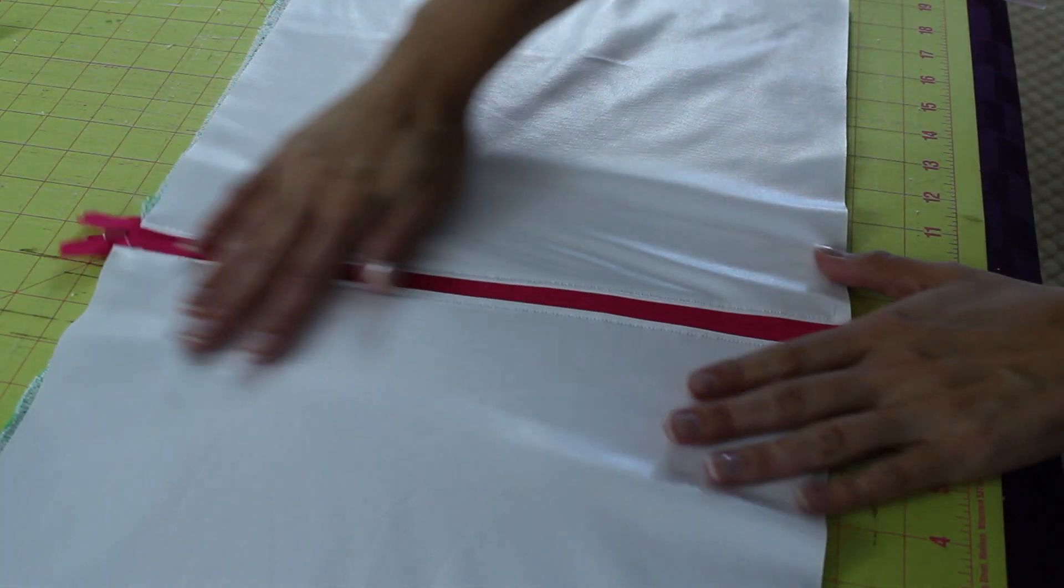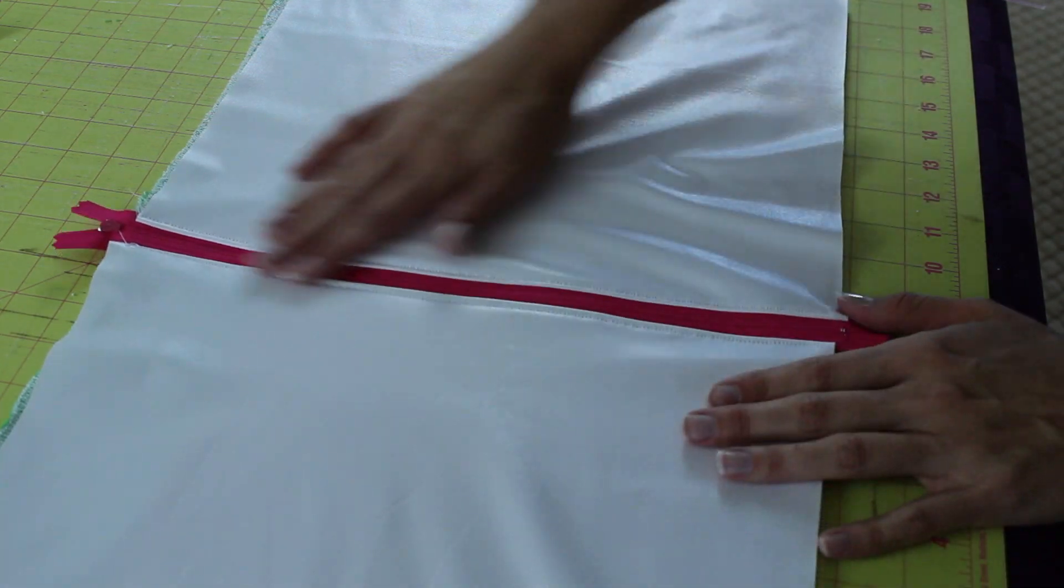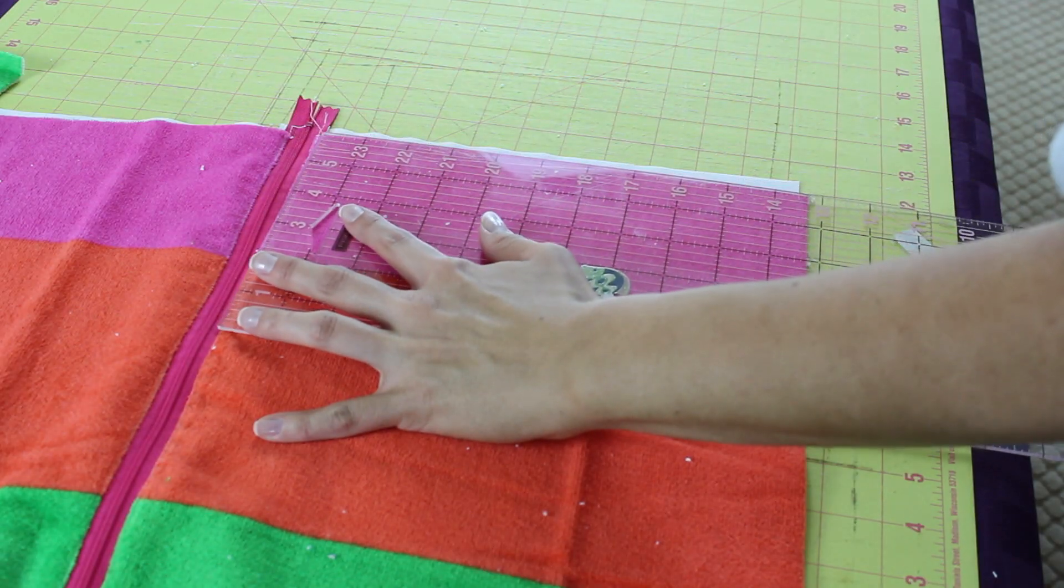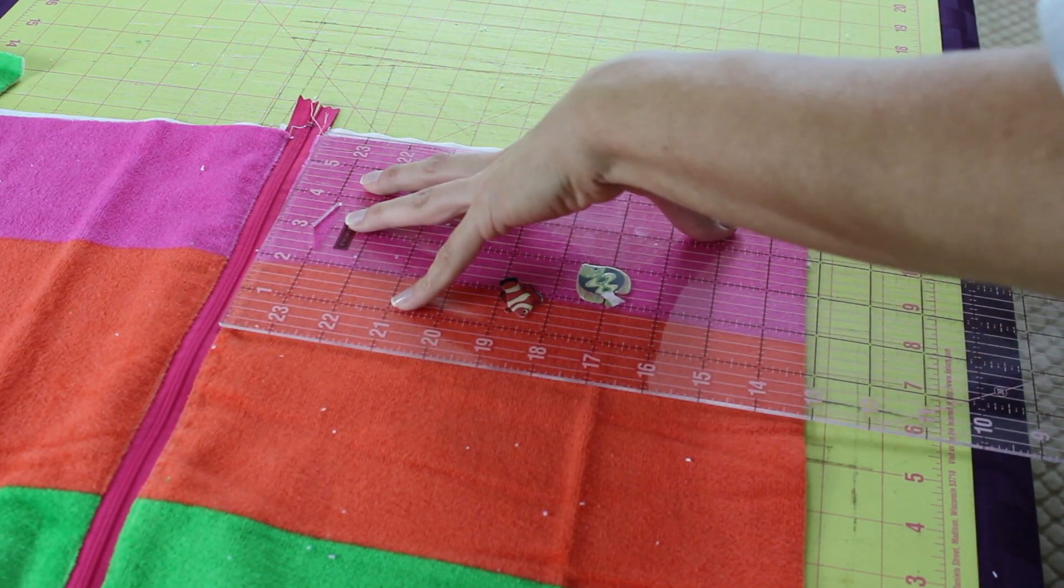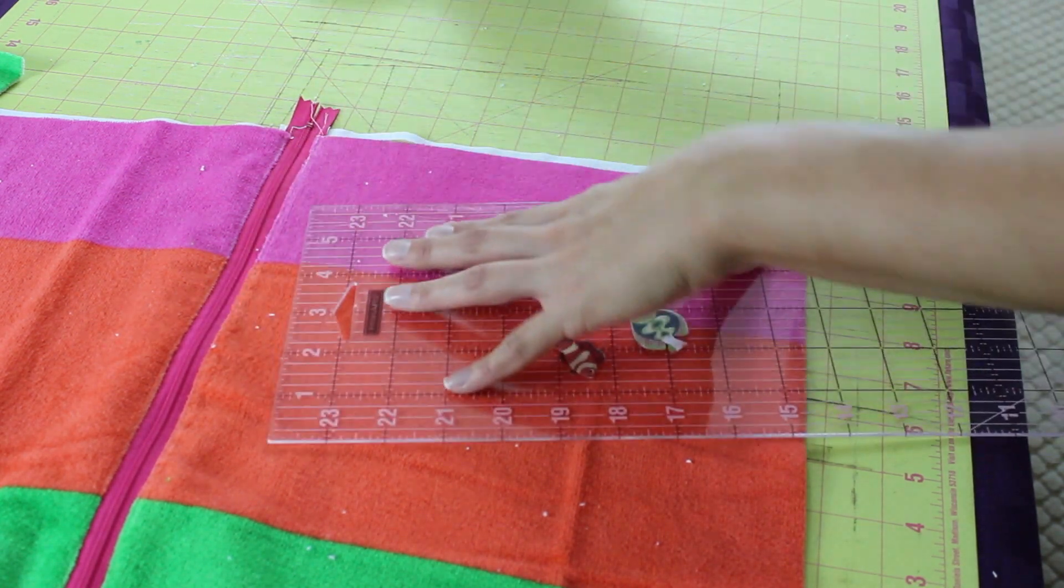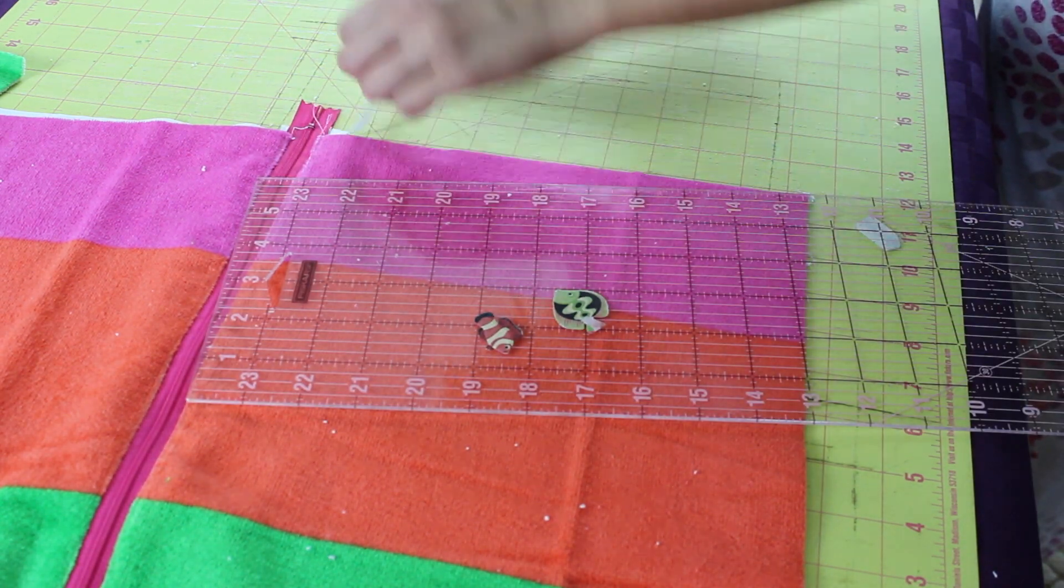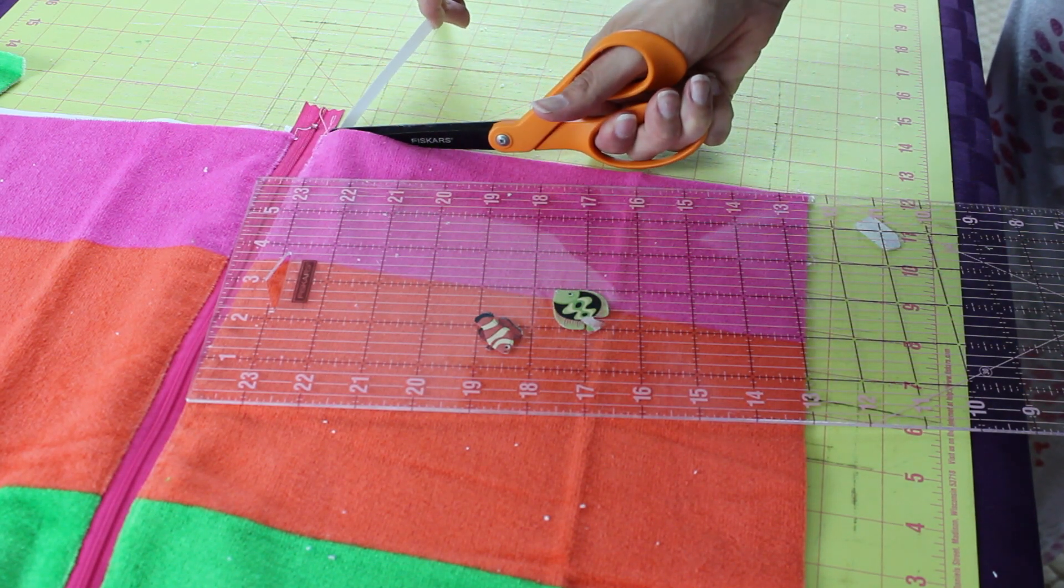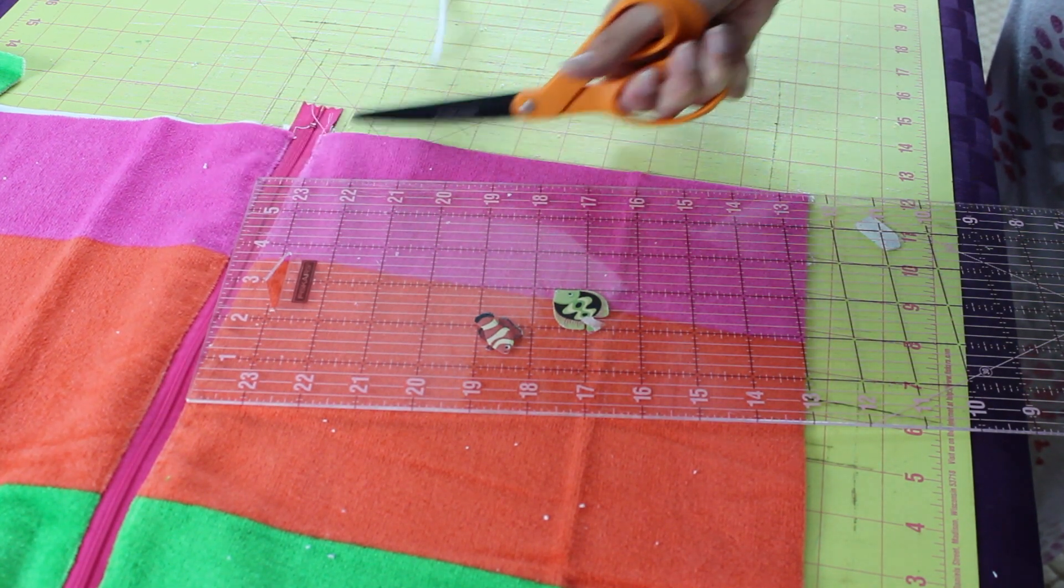So topstitch the other side. You can see how this is looking. And then we're going to trim up our sides. Sometimes that PUL can be a little bit slippery. And we're just going to trim everything up so that it makes it nice and easy for us to sew all the way around our pouch. Everything is trimmed up. It's going to be time to sandwich all the layers together.